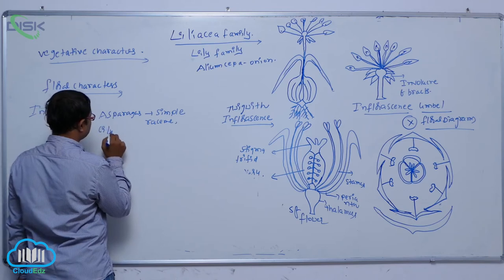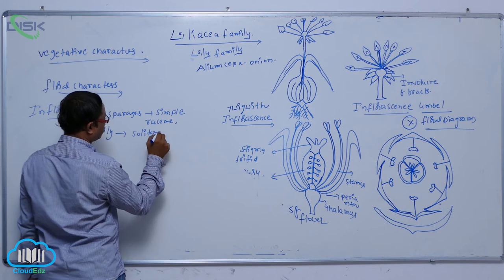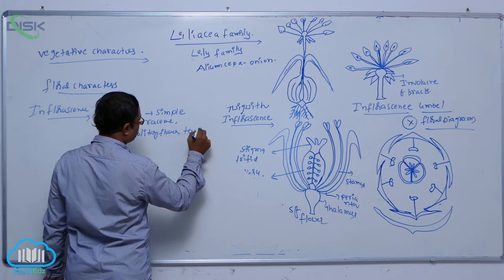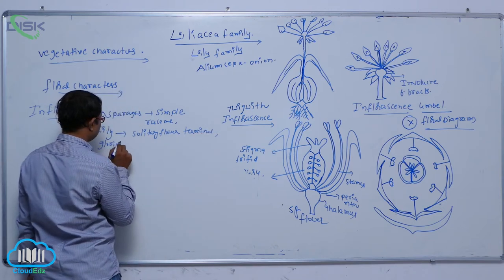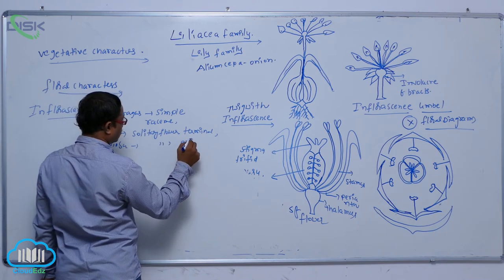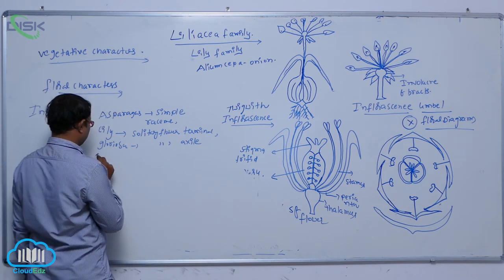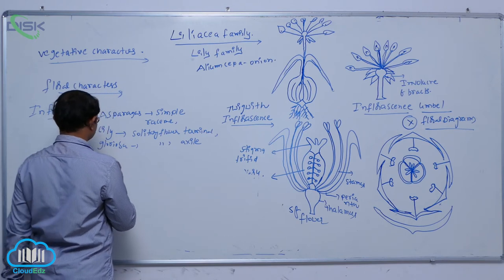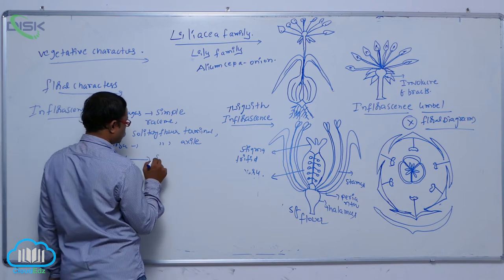In lily, the inflorescence is a solitary flower, terminal. In gloriosa, it is a solitary flower, axillary. After that, in onion, the allium species, the inflorescence is a simple umbel.